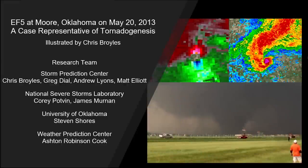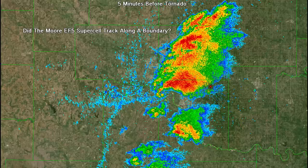This project is a joint effort between the Storm Prediction Center, National Severe Storms Laboratory, University of Oklahoma, and Weather Prediction Center. A question I often get asked is: why did the Moore storm produce such a prolific tornado?